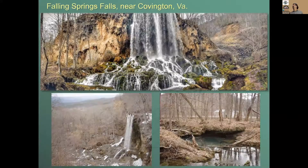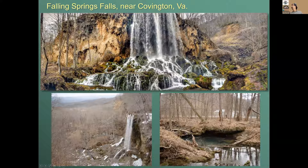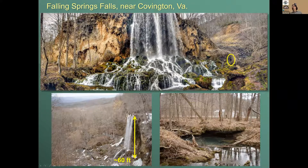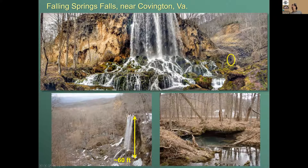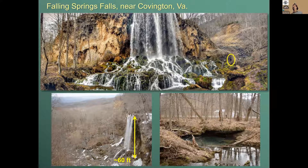One of the most spectacular examples of this process is Falling Spring Falls near Covington, Virginia. About 60 feet high, it can be viewed from the road or hiked to from below. It's fed by a stream coming out of Warm River Cave — the cave water is naturally heated by moving deep into the subsurface to about 70 degrees Fahrenheit, maintaining that temperature year-round, making it another popular swimming spot. The pools and cascades are formed by precipitation of calcium carbonate out on the surface.